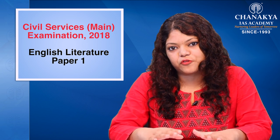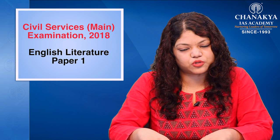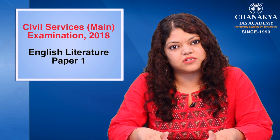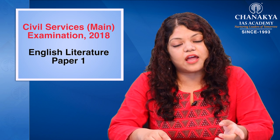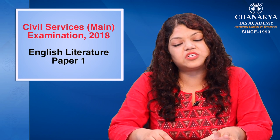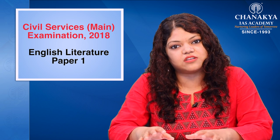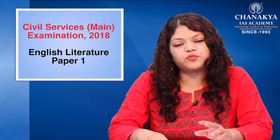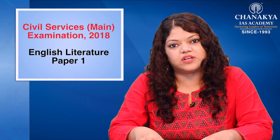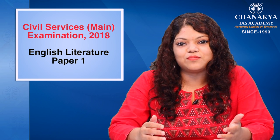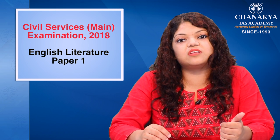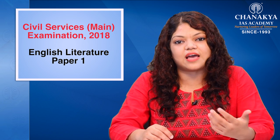How to attempt the question paper? The instructions are written on the first page of the question paper that you will get. All in all there are 8 questions but all of them are not compulsory. Only question number 1 and question number 5, both of which have 5 parts each, are to be done in a compulsory manner. The other 3 questions that are to be attempted — 2 have to be from one section and 1 has to be from another section. Please do not make the mistake of attempting all 3 questions from 1 section because then 1 question will not be evaluated at all.